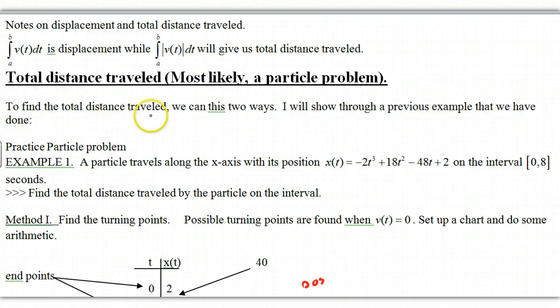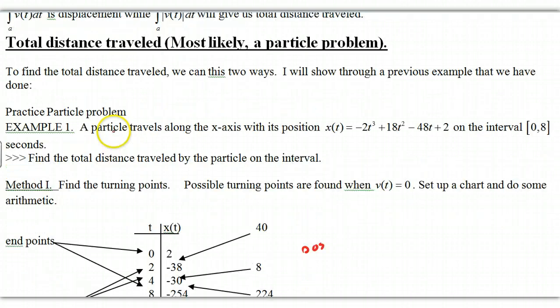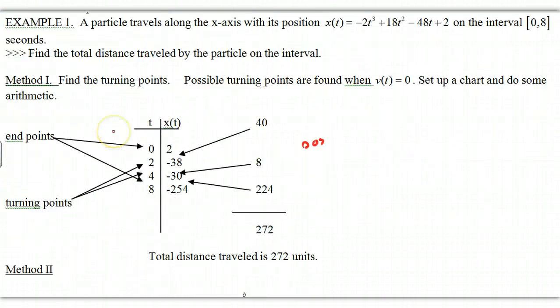Okay, so let's start off with total distance traveled. With this, we have a particle problem. The particle travels along the x-axis with its position x(t) = -2t³ + 18t² - 48t + 2. This says that we move along the x-axis, so it's going to be moving left and right. If it says y-axis, it's moving up and down.